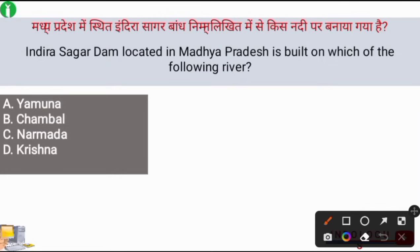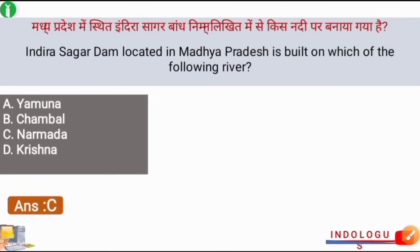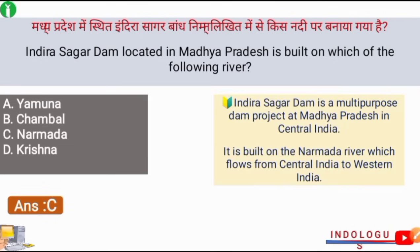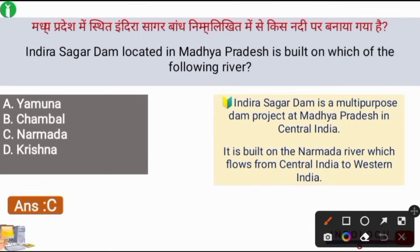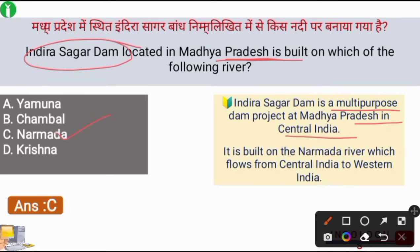Now we will discuss the important MCQs. First question: The Indira Sagar Dam, located in Madhya Pradesh, is built on which river? The right answer is option C, that is the Narmada River. The Indira Sagar Dam is a multi-purpose dam project in Central India, built on the Narmada River, which flows from Central India to Western India.